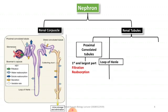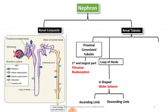The second part of the renal tubule is the loop of Henle. As shown in the figure, the loop of Henle is a U-shaped structure. It is a very important part that balances water in the body. It has two parts: the descending limb and the ascending limb. In the descending limb, water reabsorption occurs, and in the ascending limb, sodium and chloride ions are reabsorbed. The loop of Henle is a very important part.